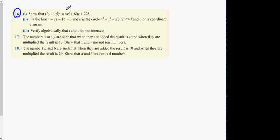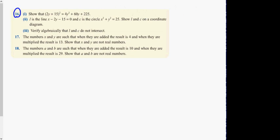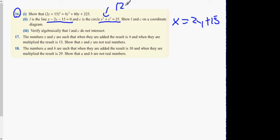For question 16, part one: you need to multiply out (2y plus 15) by (2y plus 15) and prove it equals the given expression. Then identify L as the line and C as the circle. Get x on its own from the linear equation — if you get y on its own you'll end up with a fraction, so get x on its own: x equals 2y plus 15. Substitute and replace x with (2y plus 15) squared, multiply it all out, apply the minus-b formula, and if it gives complex roots it doesn't intersect.